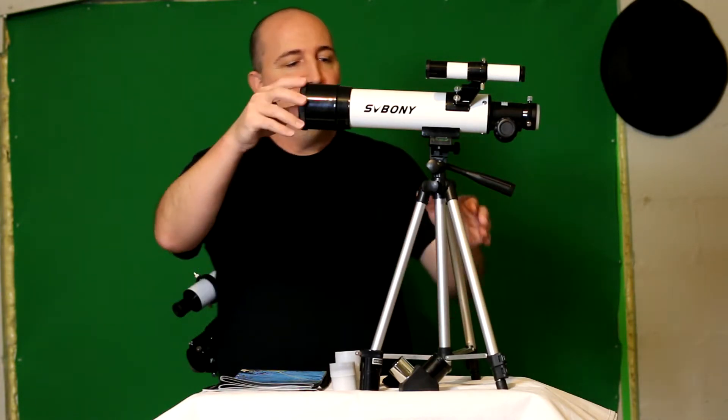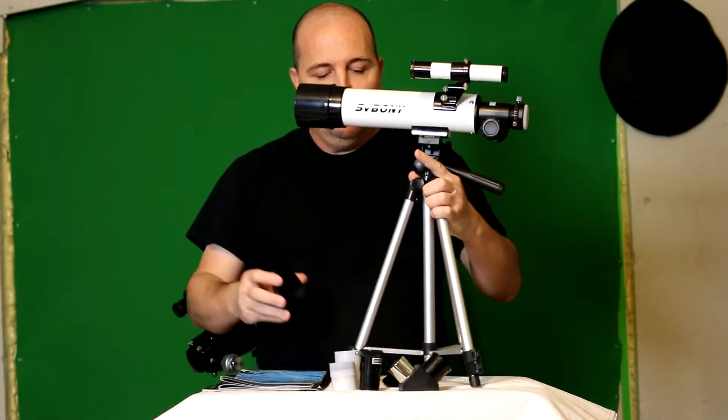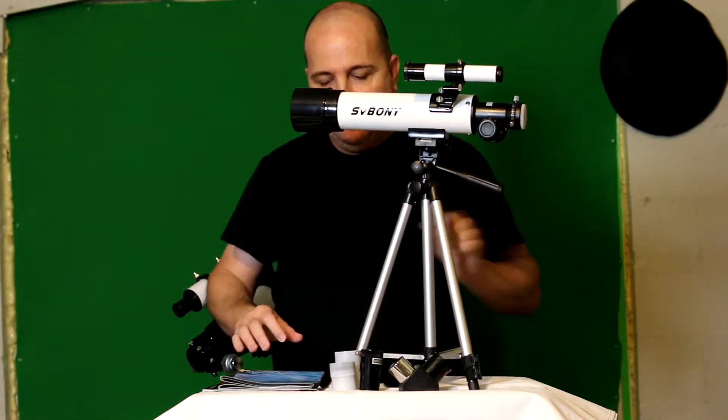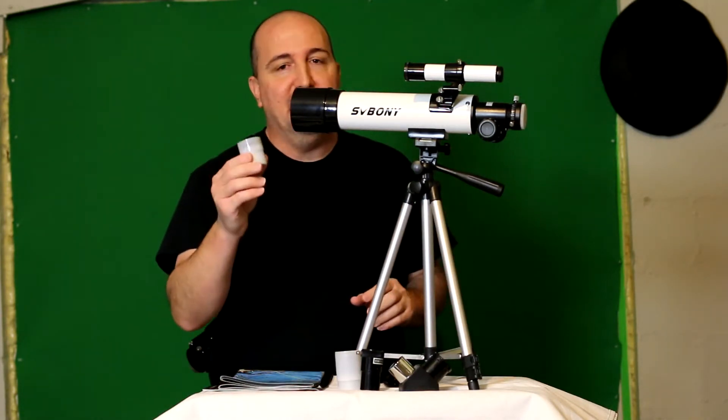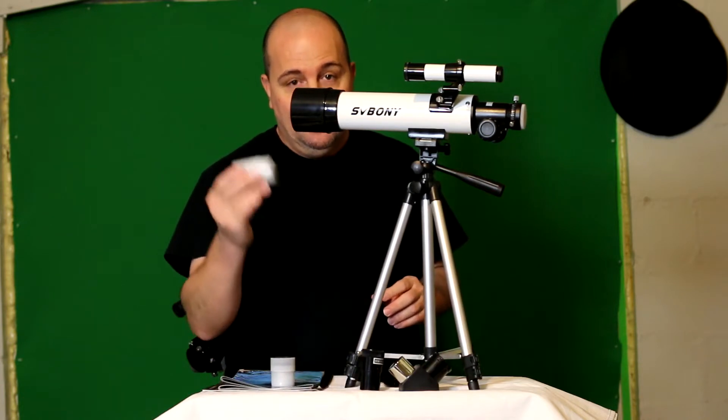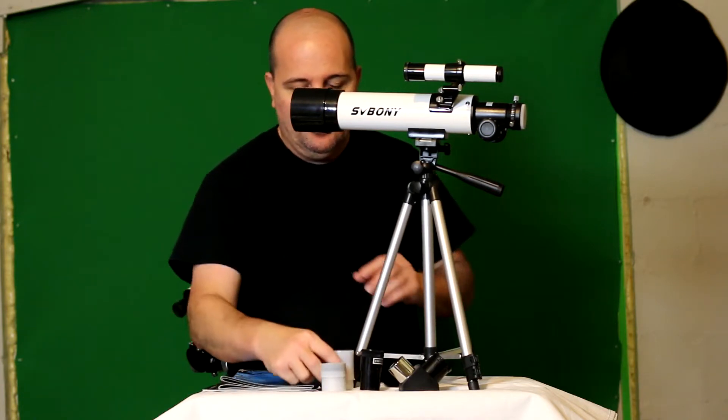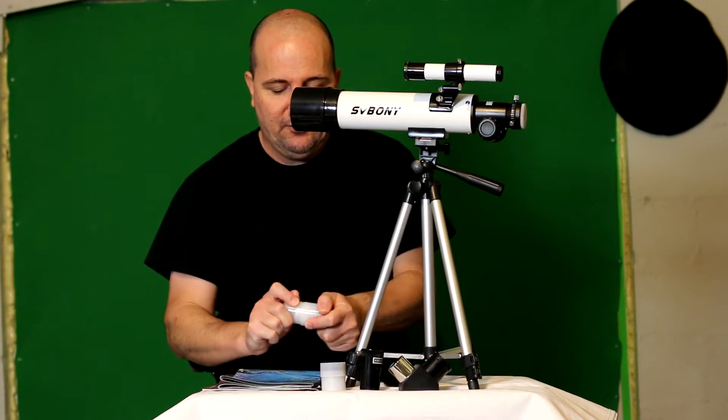It is a 60 millimeter, which is a two inch, 420 millimeter focal length, and it comes with some really nice accessories. Two eyepieces, a 9 millimeter, a 20 millimeter, and I'll show you some of the eyepieces. Pretty quality eyepieces too, actually.